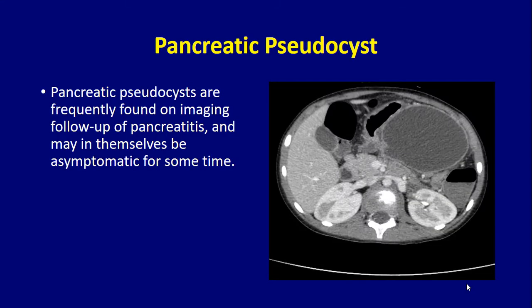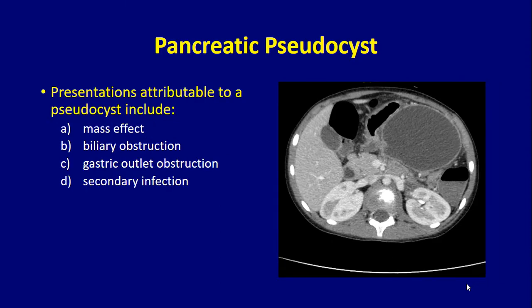Pancreatic pseudocysts are frequently found on imaging follow-up of pancreatitis and may be asymptomatic for some time. When they present, they do so by mass effect compressing surrounding structures, biliary obstruction, gastric outflow obstruction, or secondary infection. In these situations, some form of intervention has to be done.